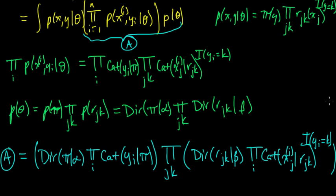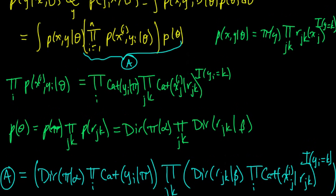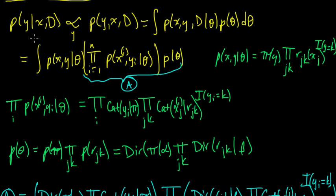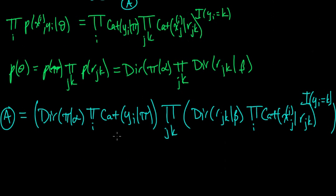We're back once again doing Bayesian Naive Bayes, and we're going to get a fully Bayesian classifier. We're looking at this predictive distribution, which we wrote as proportional to a certain expression. We started integrating out our parameters and found some expressions, ending up with Dirichlet-categorical conjugacy products. Now let's apply the Dirichlet-categorical conjugacy to simplify these.